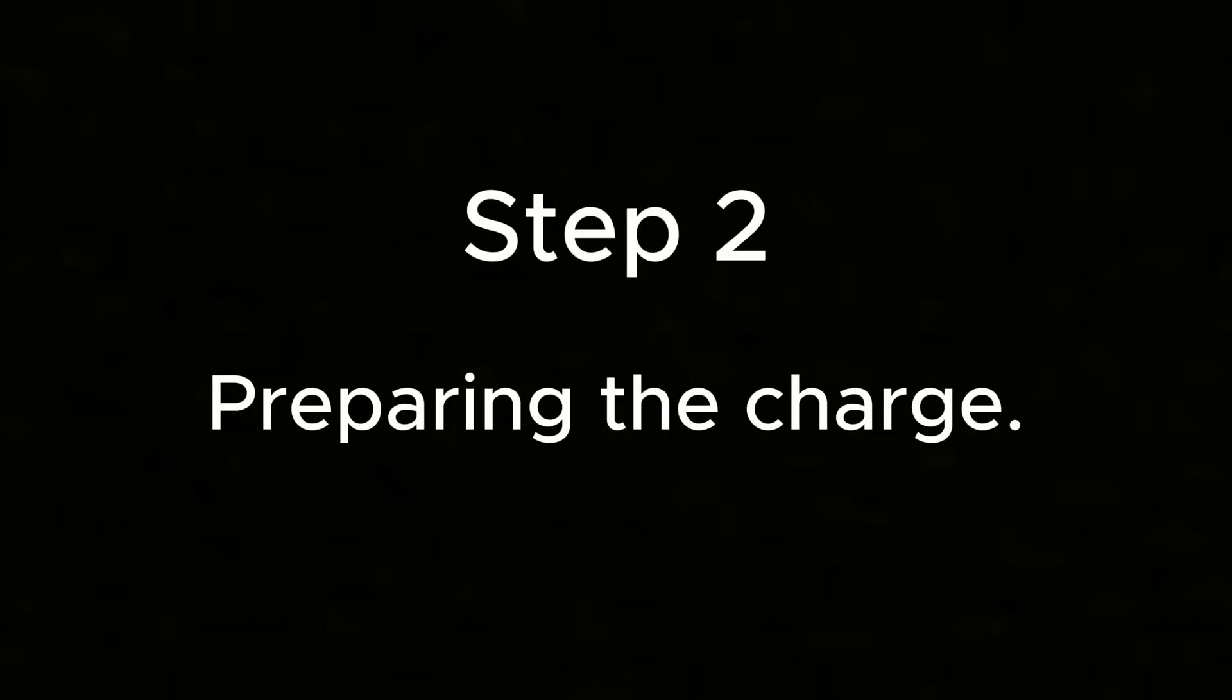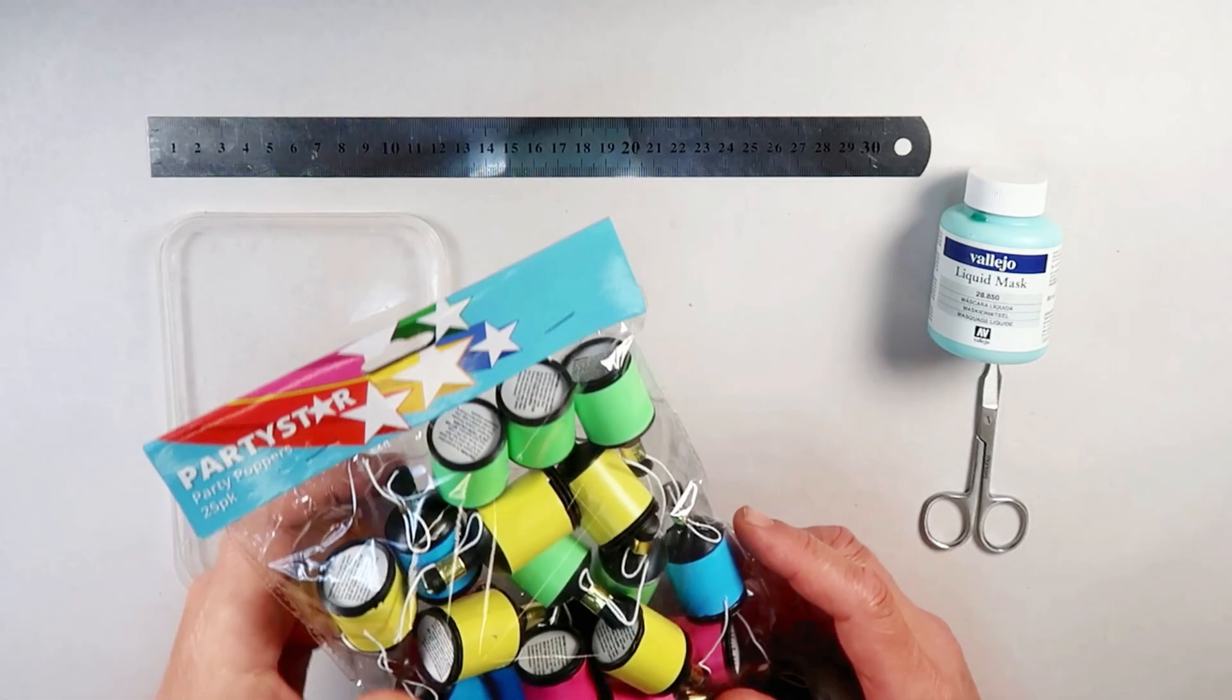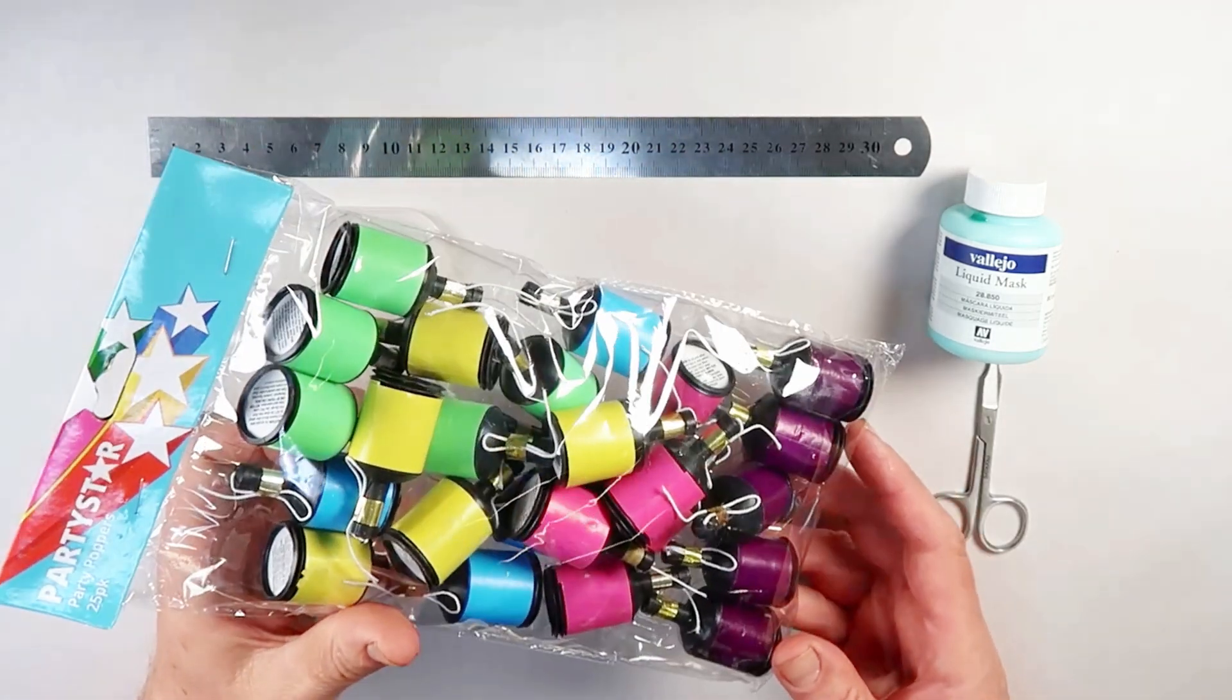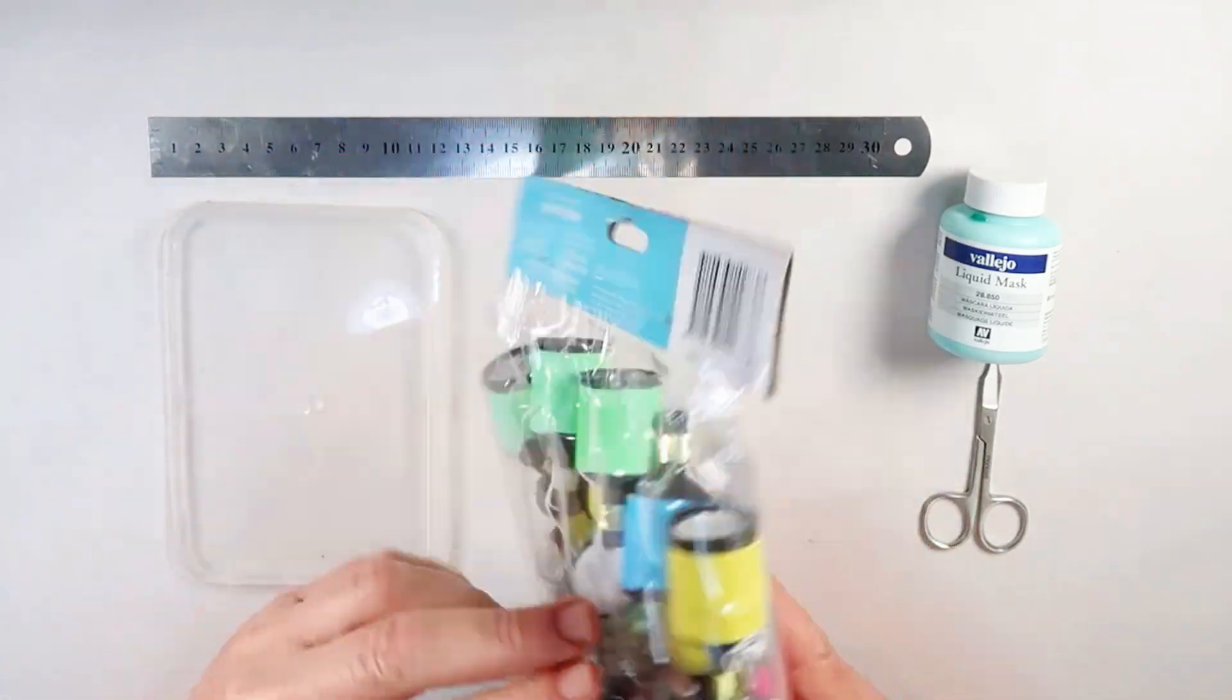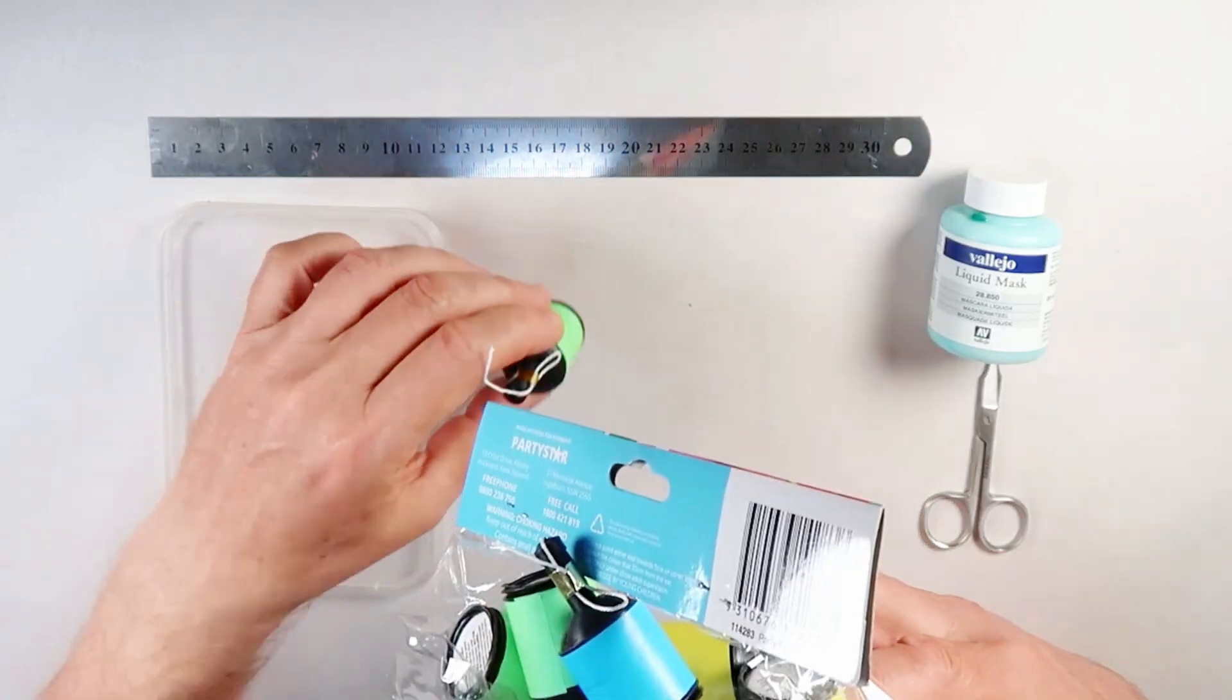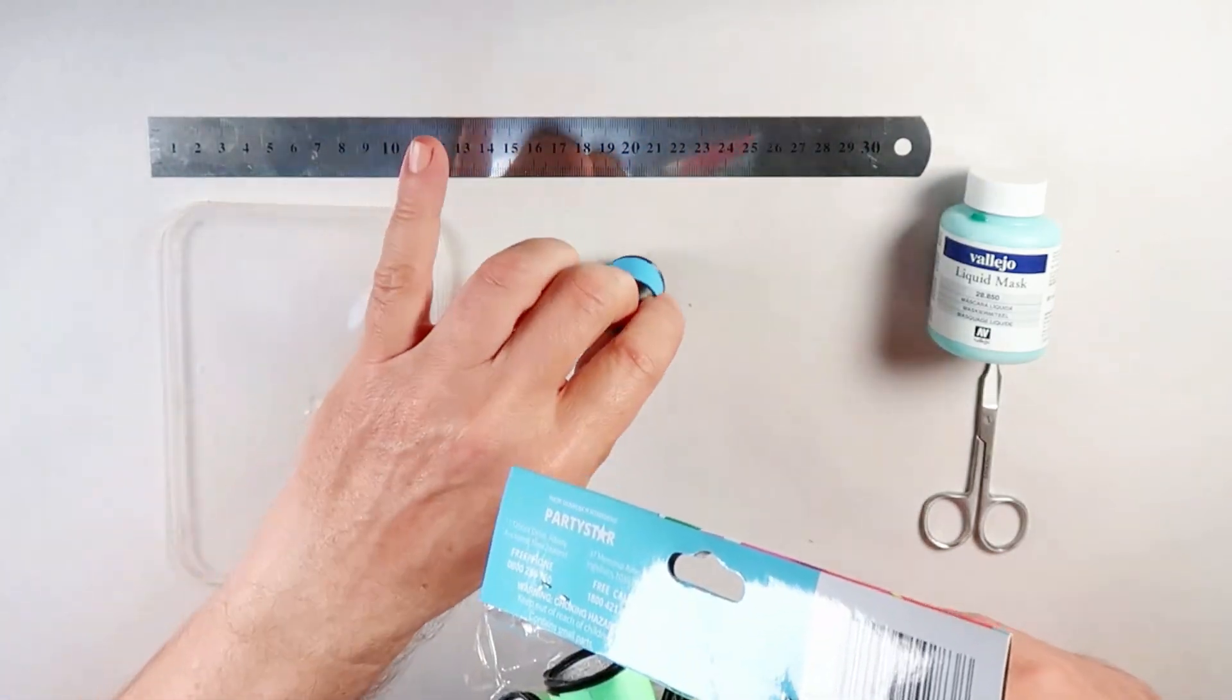Step 2. Preparing the charge. We use the small explosive charge from a party popper for our bang. It's cheap, safe and surprisingly loud.